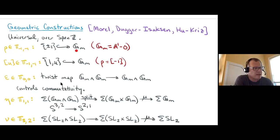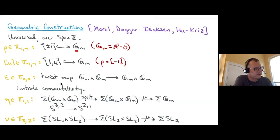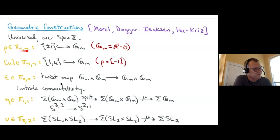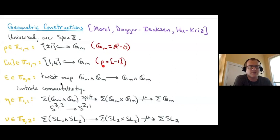The first element I want to discuss is rho in π_{-1,-1}. You take ±1 and include it into G_m (which is A¹ minus 0, the multiplicative group). More generally, including a unit u into G_m gives an element [u] in π_{-1,-1}, and rho is another name for [−1]. More generally, including 1 and some unit u into G_m gives [u] in π_{-1,-1}. Rho comes up so frequently that it gets its own name; these bracket-u elements in general are more obscure. These are geometric constructions closely related to the arithmetic of the field.